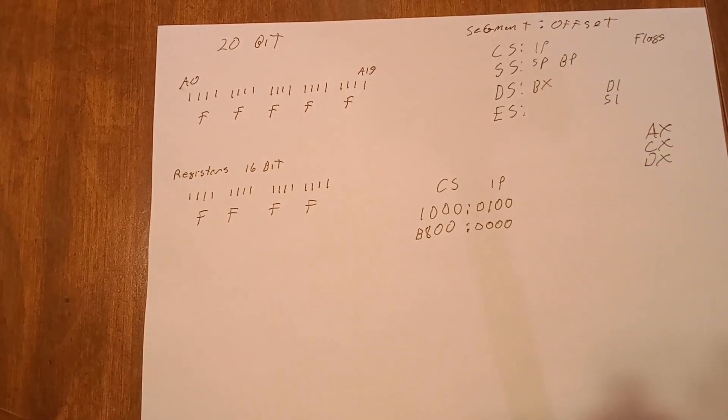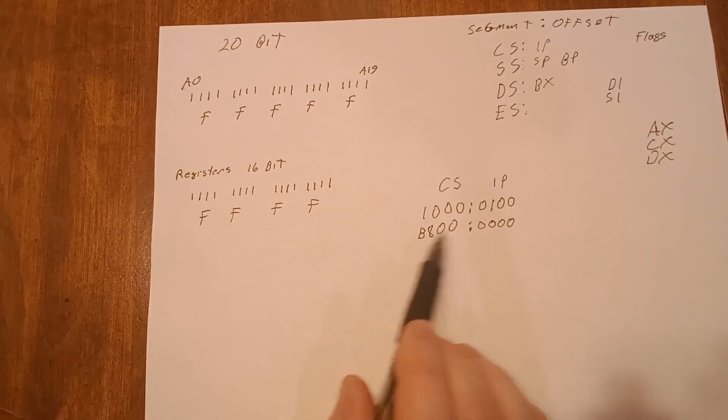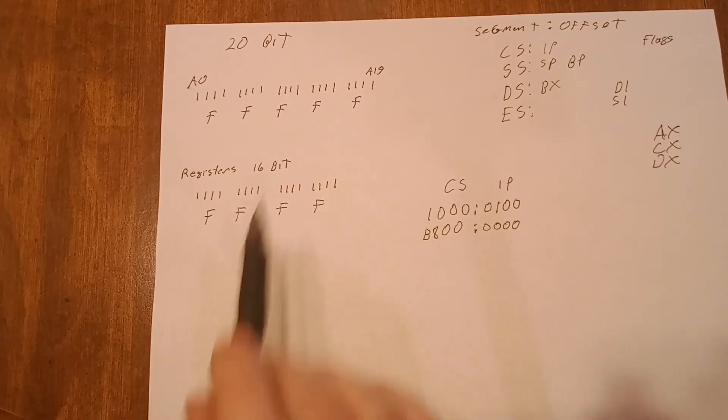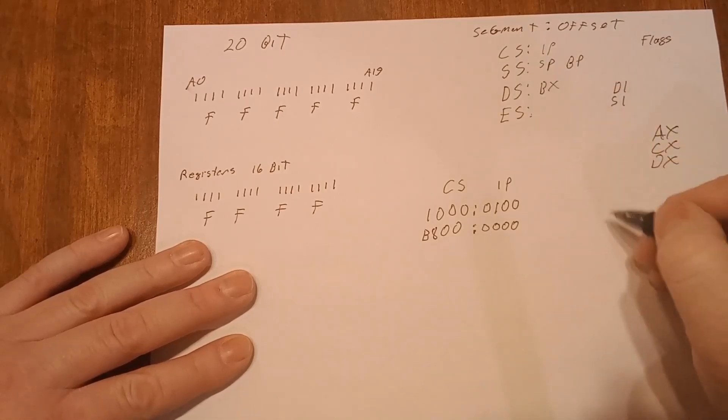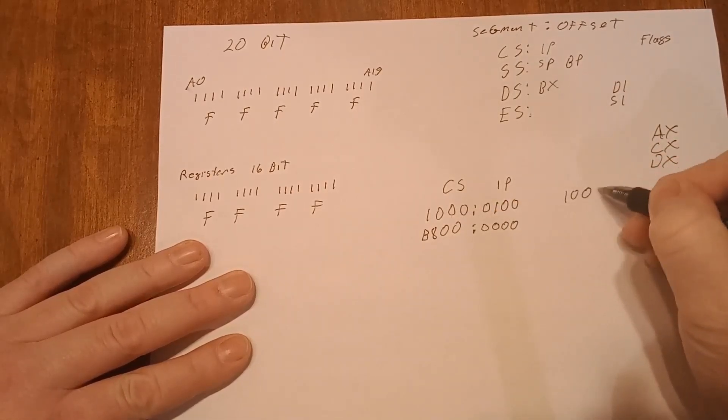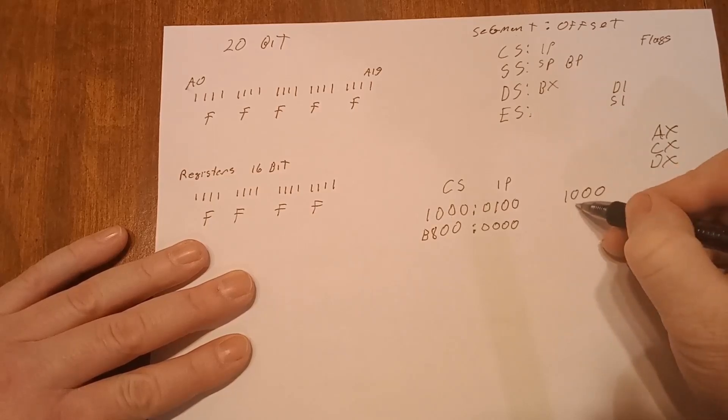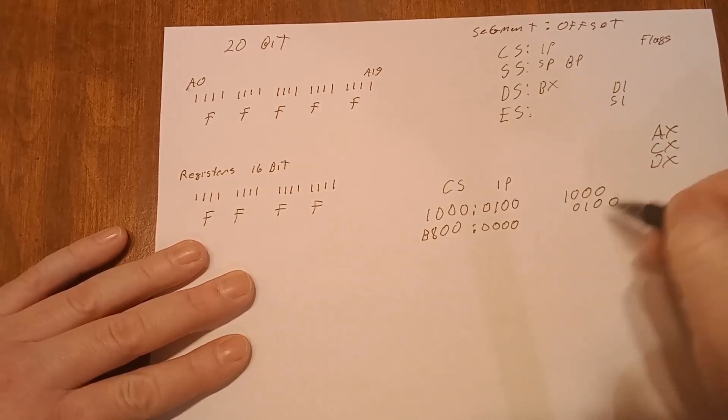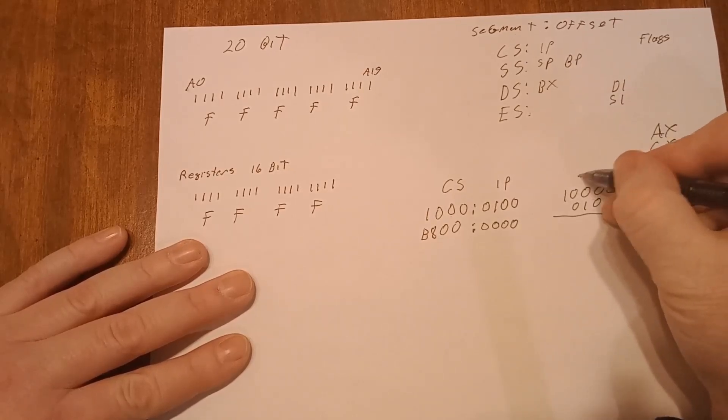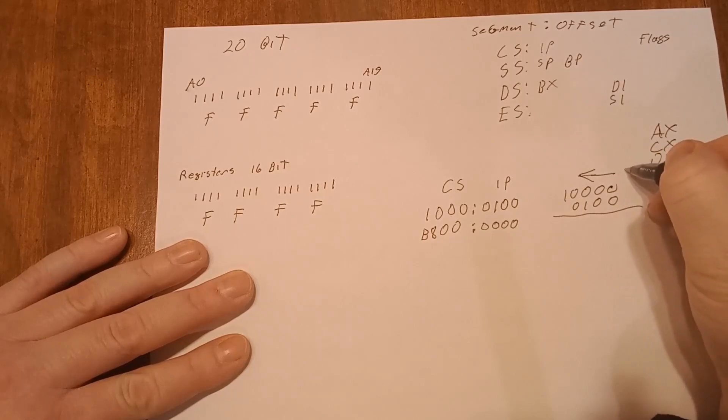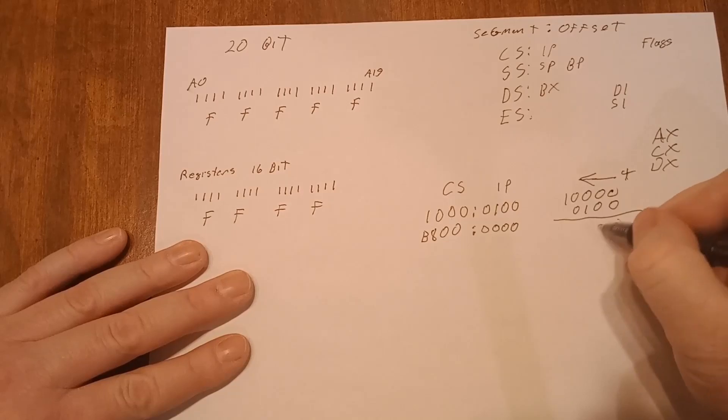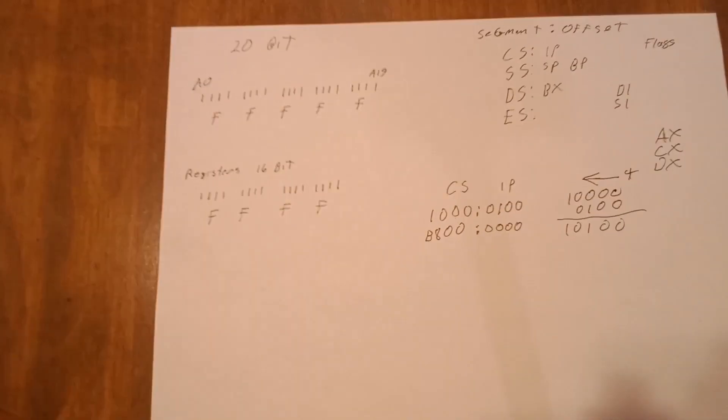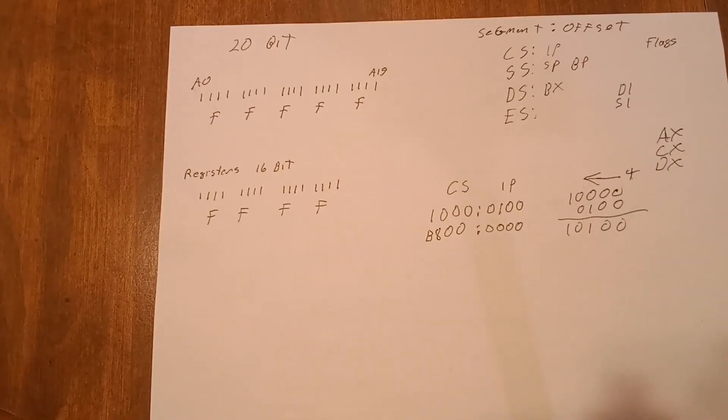So now the way you interpret that from two 16 bit numbers to a 20 bit is your segment. So here you would go one zero zero zero and underneath we write one zero one and you add them together. So there's an extra zero added to that. So it's shifted four bits.